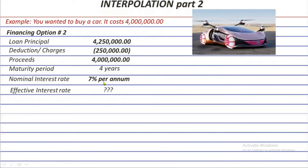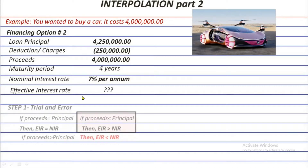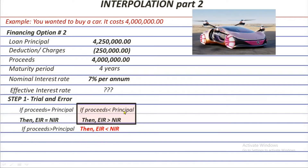Borrowing option number two has an unknown effective interest rate, but we are sure it is not 7%. This is because the principal and the proceeds are not equal. Since the proceeds received by the debtor are lesser than the principal of the loan to be paid in the future, the effective rate is higher than the nominal rate — therefore, the effective interest rate is higher than 7%.